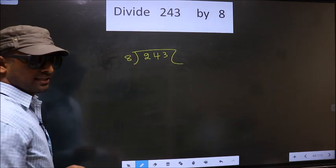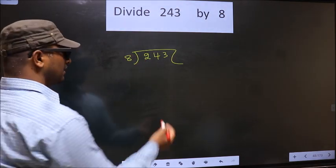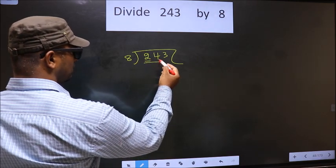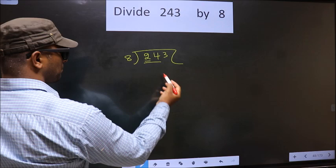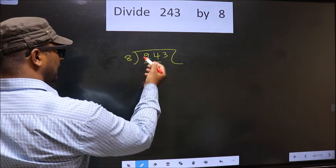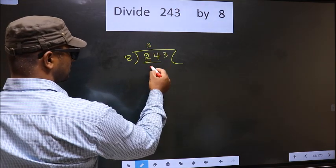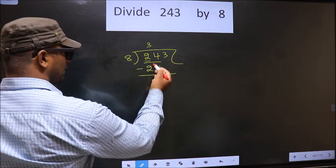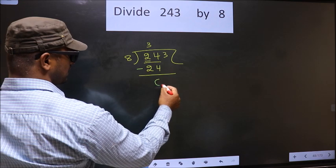Now here we have 2. 2 is smaller than 8, so we take two numbers, that is 24. When do we get 24 in the 8 table? 8×3 is 24. Now you subtract: 24 minus 24 is 0.